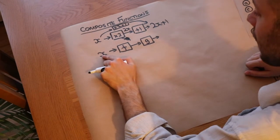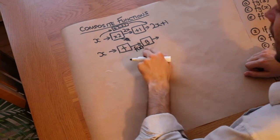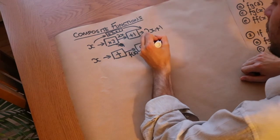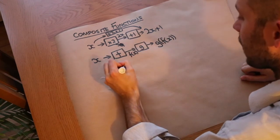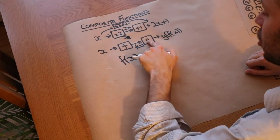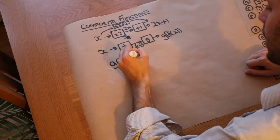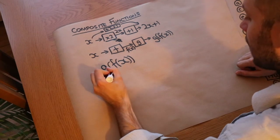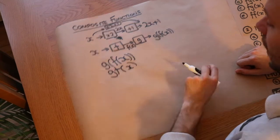More generally, if x is fed through function f, it outputs f(x). If f(x) is then fed into g, it outputs g(f(x)). So applying f then g gives us g of f of x, and we can write that as gf(x), which means exactly the same thing.